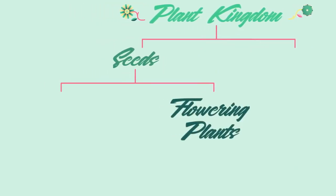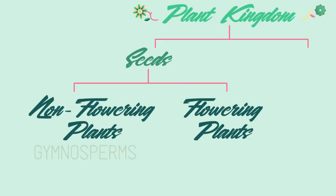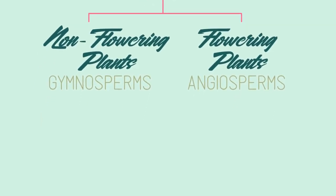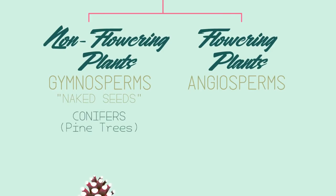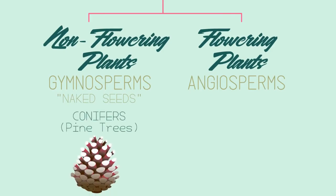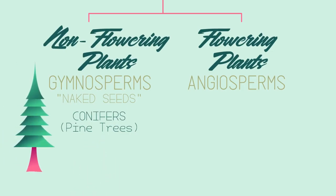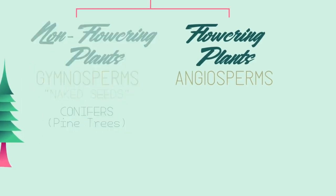Seed plants can be split into flowering plants and non-flowering plants. These have scientific names of gymnosperms and angiosperms. Non-flowering plants do not produce flowers and are reproduced by means of exposed seed or ovule. Gymnosperm means naked seed. Like with conifers, the cone on a pine tree is a naked seed and they do not produce flowers. Gymnosperms are usually tall, evergreen trees, often with needle-shaped leaves, and are usually found in dry places.